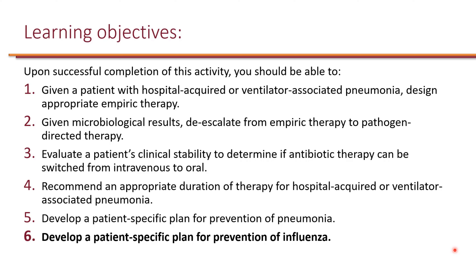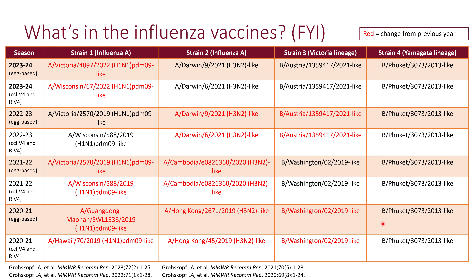Now, let's develop a patient-specific plan for prevention of influenza. Let's take a look at what's in the influenza vaccine. In this table, I am showing you the four different strains that have been in the influenza vaccine in the last four seasons, starting from 2020-2021.